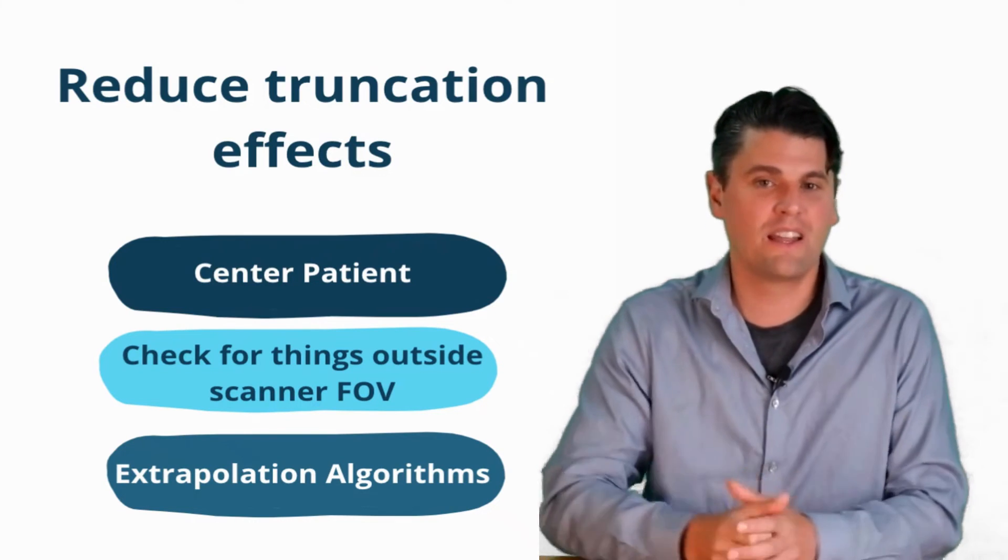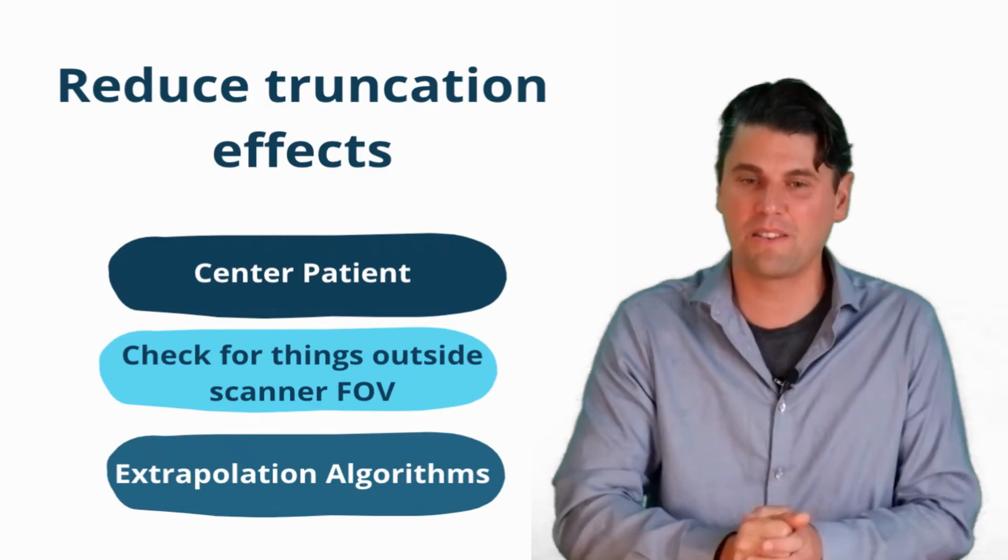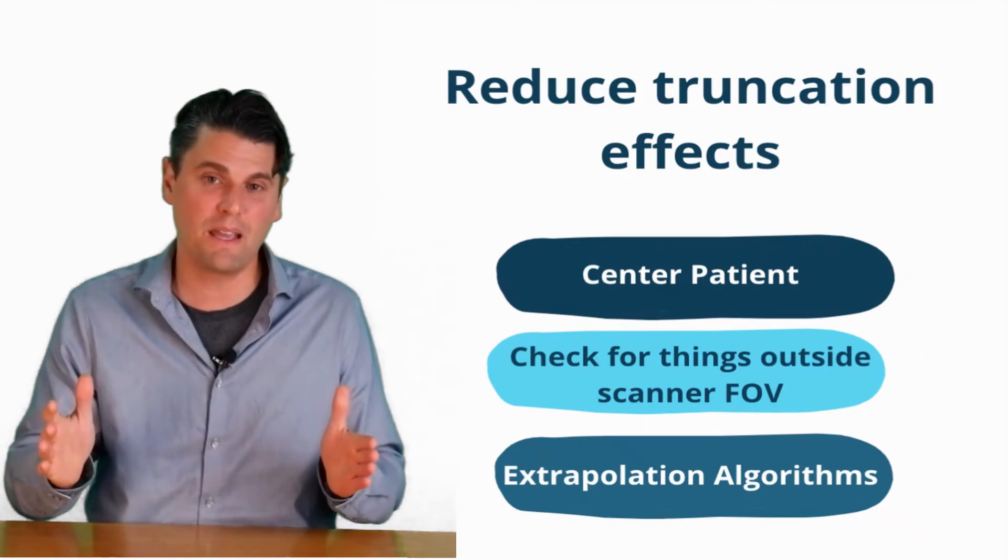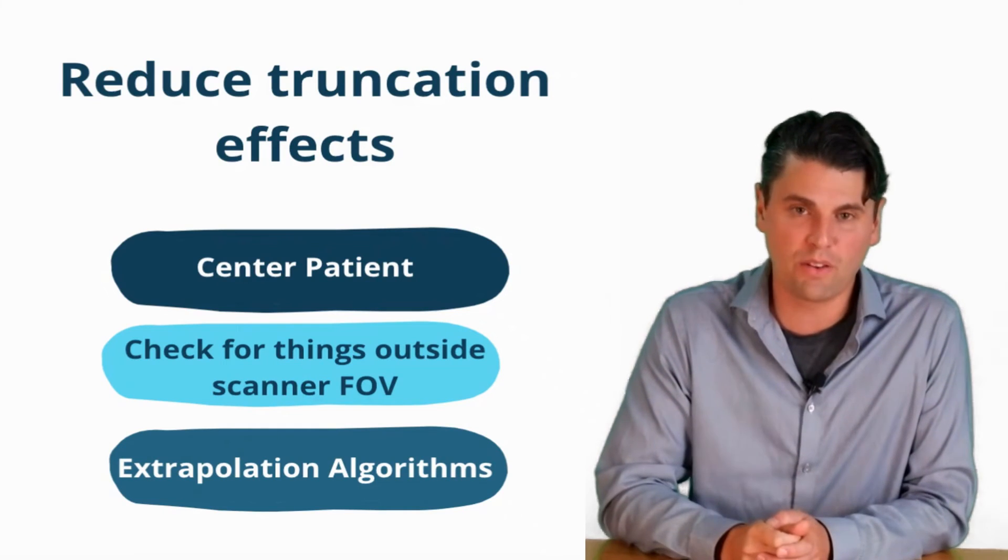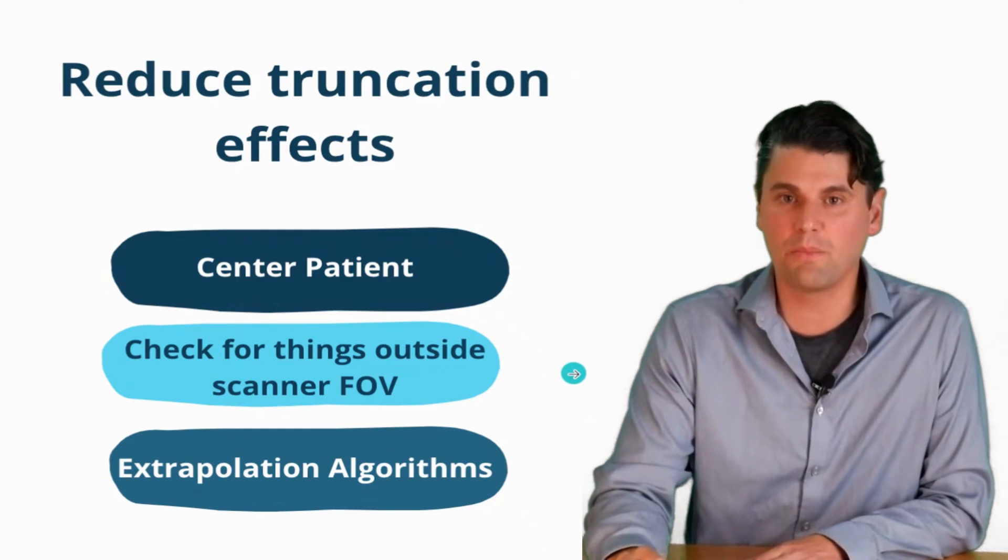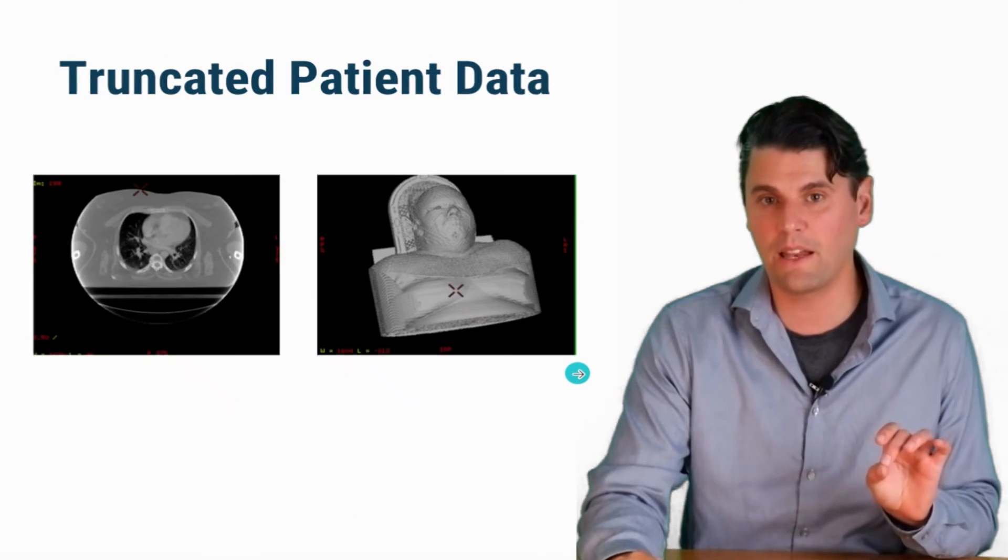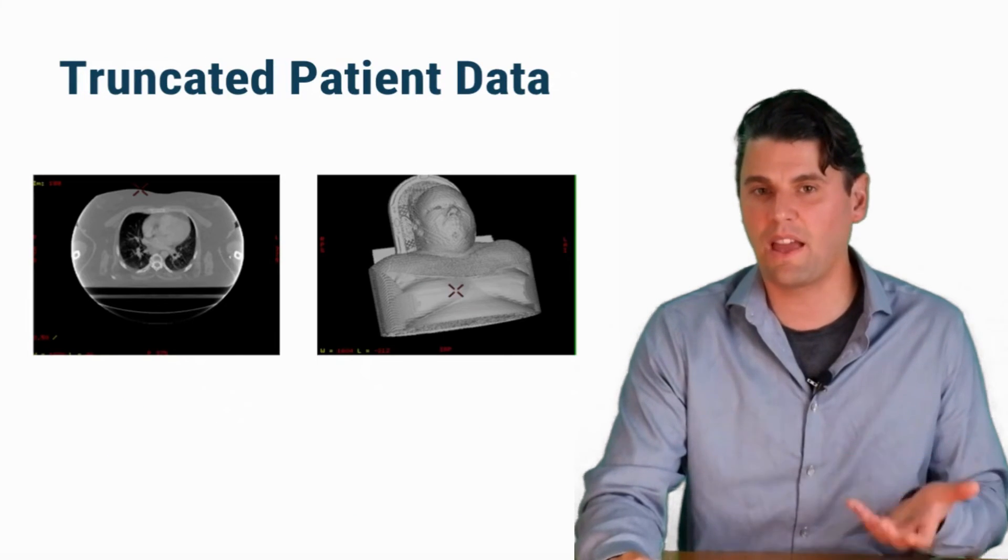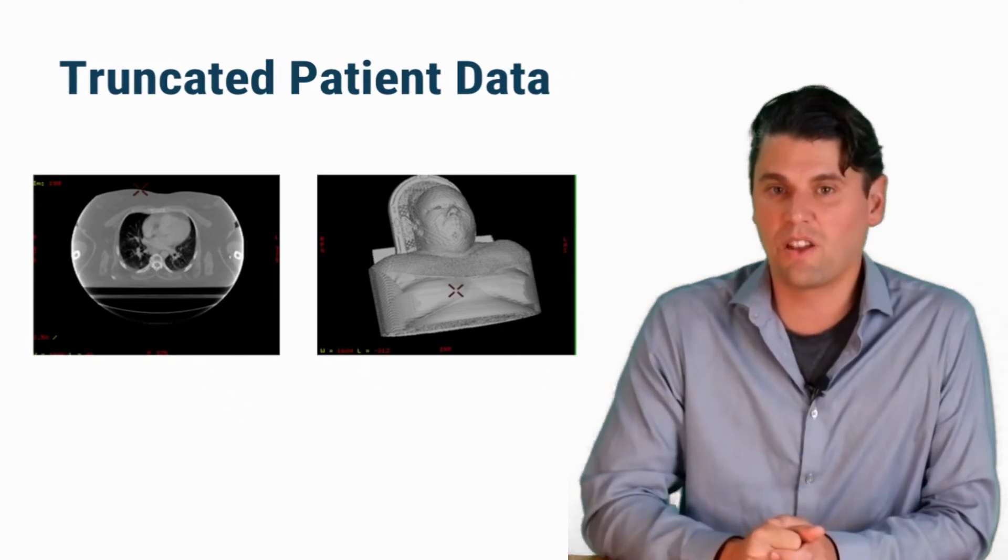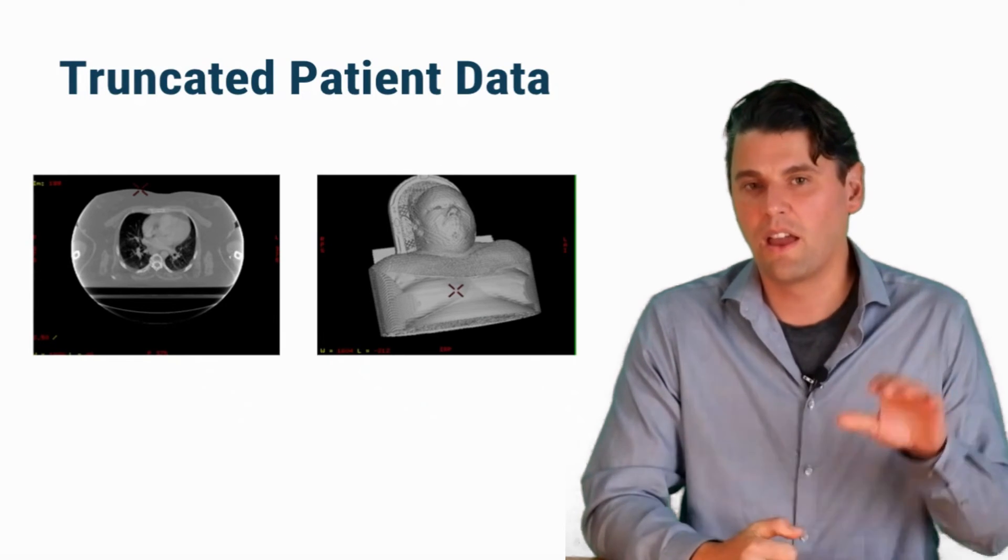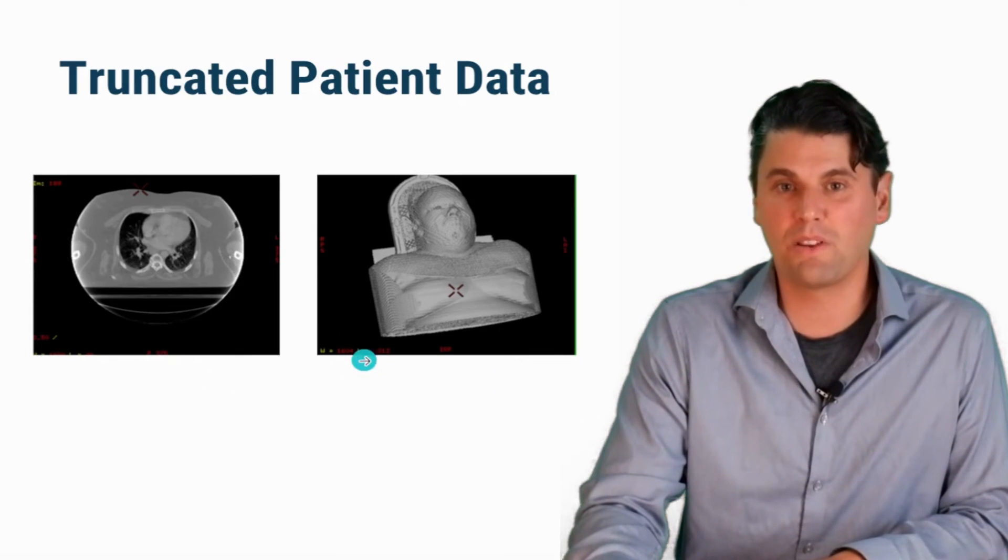Then number three is extrapolation algorithms. So this is ways to estimate the data that's outside of the actual measurement. When we talk about extrapolation, it's never going to be as good as interpolation, where we're actually measuring in between our measurements, but extrapolation is trying to estimate data beyond the region for which we have measurements. There's been a lot of improvements over the years in extrapolation algorithms. These are particularly useful for the case of radiation therapy treatment planning, where the image doesn't have to have the same diagnostic quality, but we do want to have a good representation of the skin line, for instance, as well as the anatomy within for the purposes of radiation therapy treatment planning.